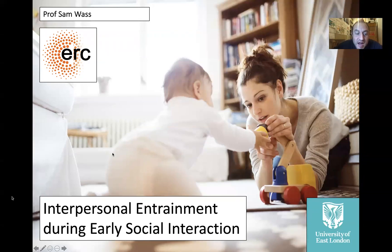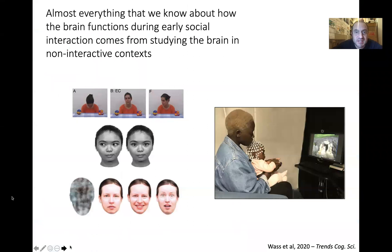Hi, I'm Sam and the title is Interpersonal Entrainment During Early Social Interaction. So we start with the paradox. Almost everything we know about how the brain functions during early social interaction comes from studying the brain in non-interactive contexts.